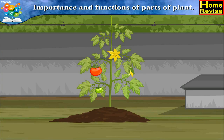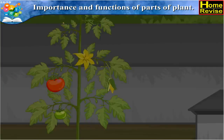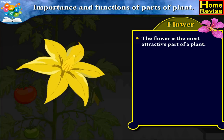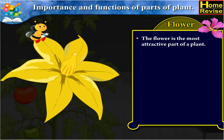Importance and Functions of Parts of Plant. The first part of a plant is the flower. The flower is the most attractive part of a plant.